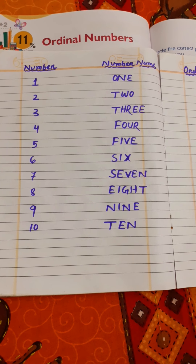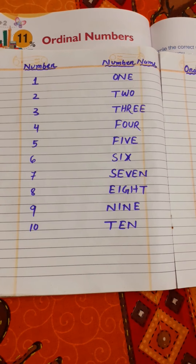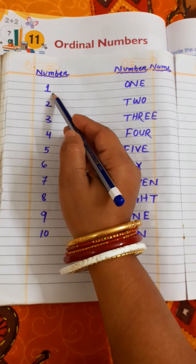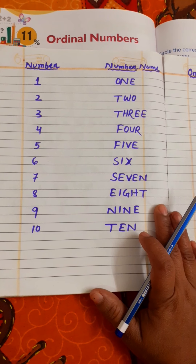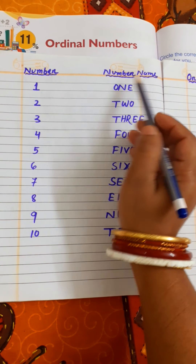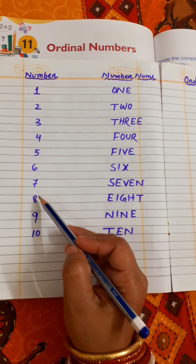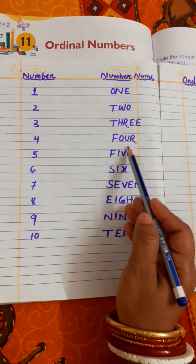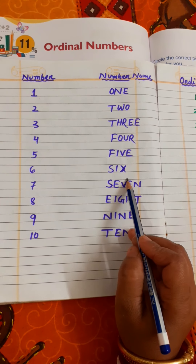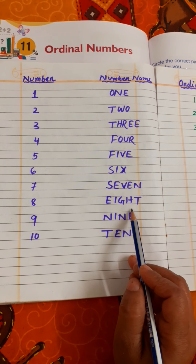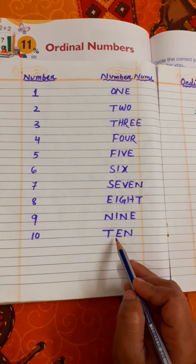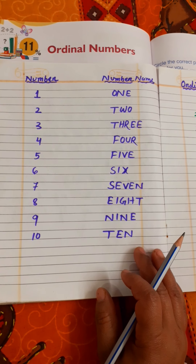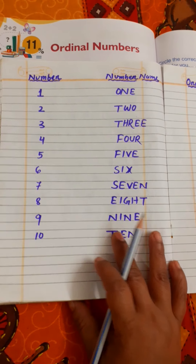Let us learn about ordinal numbers and their names. First, you already know the numbers and number names like 1, 2, 3, 4, 5, 6, 7, 8, 9, 10 — one, two, three, four, five, six, seven, eight, nine, ten. These are also known as cardinal numbers. Now we will learn about ordinal numbers.